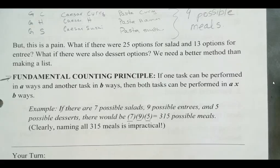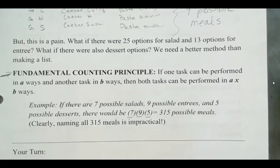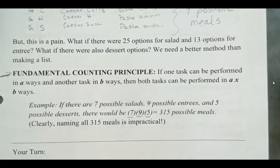So for example, if there's seven possible salads, nine possible entrees, and five possible desserts, we simply multiply all of those together and get 315 possible meals. It would take a long time to name all 315 meals, so that's a little impractical.